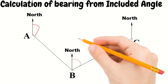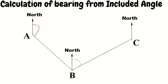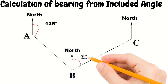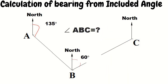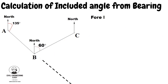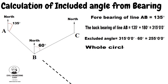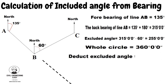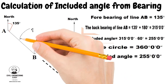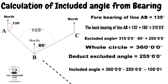Now suppose we do not have the included angle of 105 degrees, but instead we have the forebearing of each line as shown in the given figure, and we need to find the included angle ABC. Extend line AB as shown by the dotted line. The forebearing of line AB is 135 degrees, so its back bearing is 135 plus 180 equals 315 degrees. Subtracting the forebearing of line BC (60 degrees) from the back bearing of line AB (315 degrees) gives the excluded angle: 315 minus 60 equals 255 degrees. Since the whole circle is 360 degrees, subtracting the excluded angle gives the included angle: 360 minus 255 equals 105 degrees.